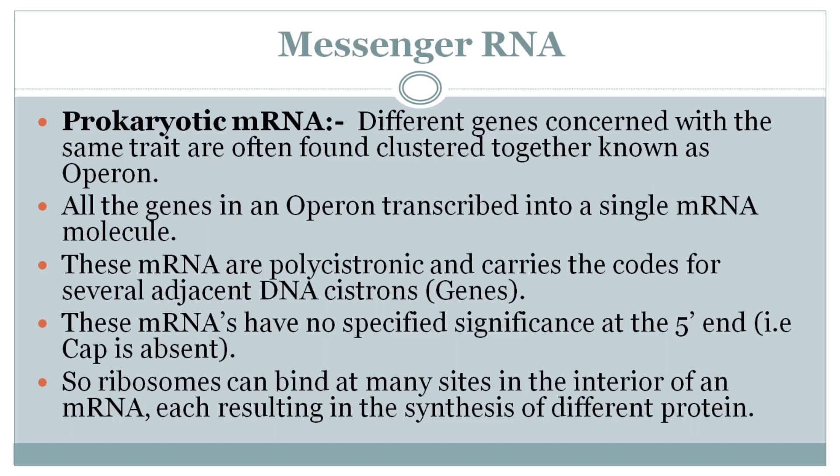These mRNAs are polycistronic and carry codes for several adjacent DNA cistrons. Monocistronic means the mRNA codes for only one protein, whereas polycistronic means it codes for many proteins.